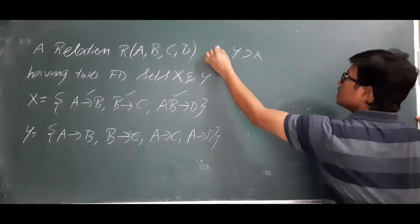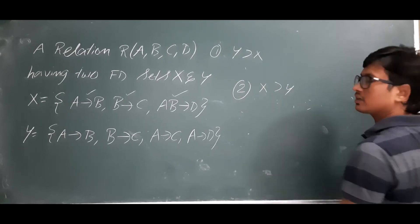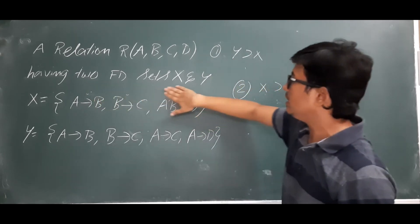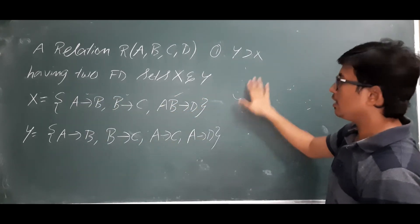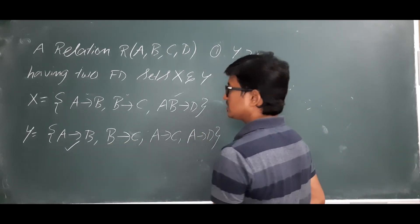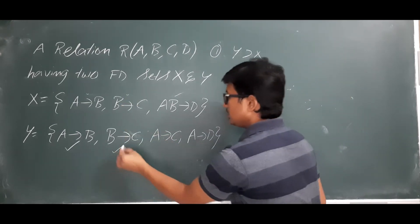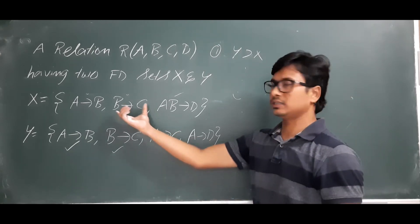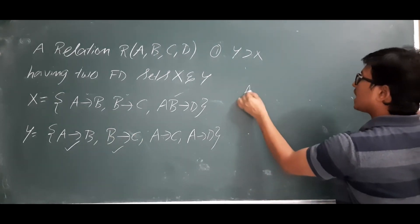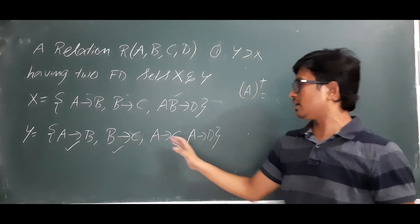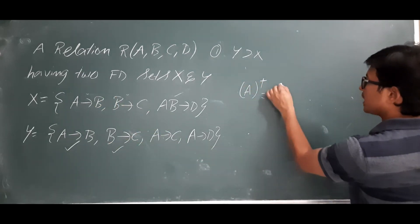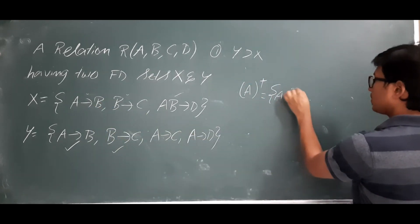Now I will check whether X covers Y or not — meaning can the FDs present in Y be derived from X? A determines B is present in the FD set X. B determines C is also present in the FD set X. A determines C is not directly present in X. We will calculate the A closure from X to check whether it is indirectly present.